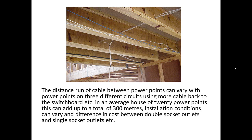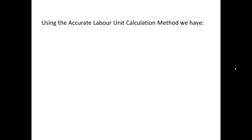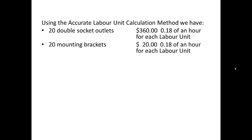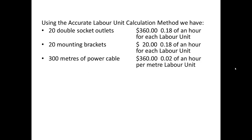Installation conditions can vary, and there are differences in cost between double socket outlets and single socket outlets — and the list can go on and on. Using the accurate labour unit calculation method, we have 20 double socket outlets at $360, at 0.18 of an hour for each labour unit; 20 mounting brackets at $20 each, at 0.18 of an hour for each labour unit; and 300 metres of cable totalling $360.